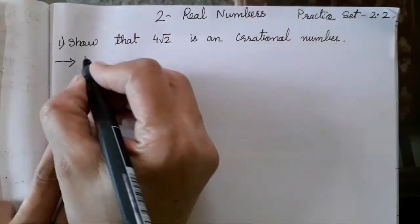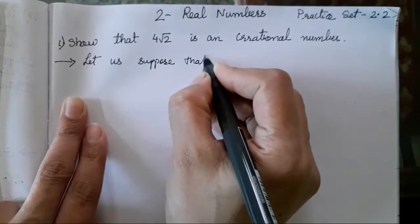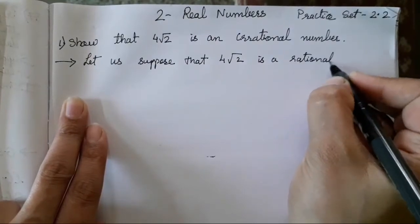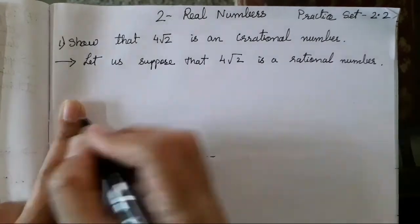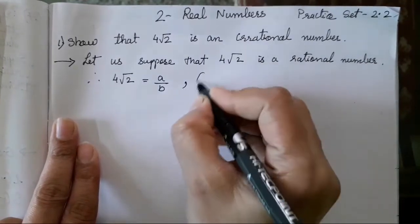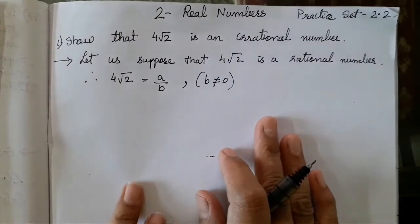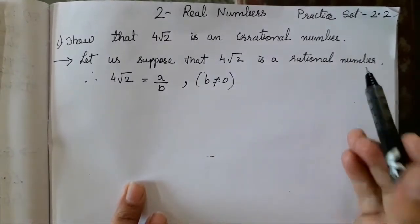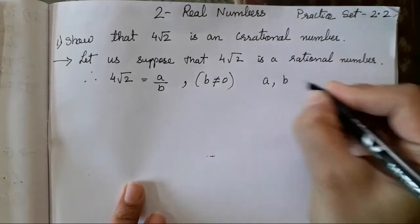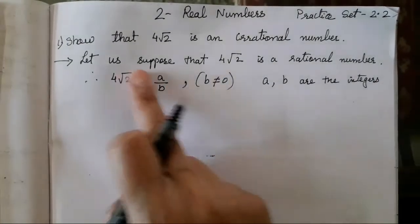So for the solution, let us suppose that 4√2 is a rational number — this is what you have to assume. Therefore, 4√2 is equal to A upon B, where B is not equal to 0. So when you suppose 4√2 is a rational number, that means A upon B where B is not equal to 0, and A and B are integers. You have to define this after writing the statement.